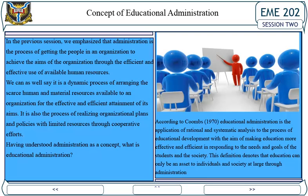Concept of educational administration: In the previous session, we emphasized that administration is a process of getting people in an organization to achieve the aims of the organization through the efficient and effective use of available human resources. It is also a dynamic process of arranging human and material resources available to an organization for the effective and efficient attainment of its aims.